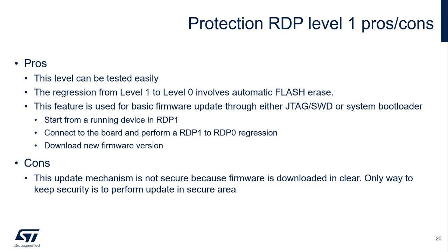The update procedure starts from a running device in RDP level 1. You connect to the board and perform an RDP level 1 to RDP level 0 regression, and then download a new version of the firmware. However, this update mechanism is not fully secured because the firmware is downloaded in clear. The only way to keep security is to perform these updates in a secure place.